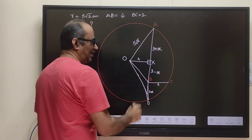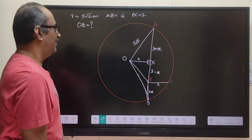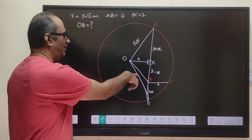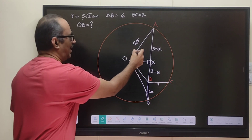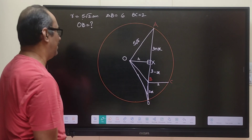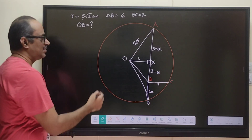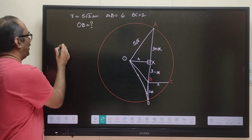Now you can see that we have two right angle triangles: triangle OAX and triangle OBX. Both of them have a common side OX — let us say that is our h.